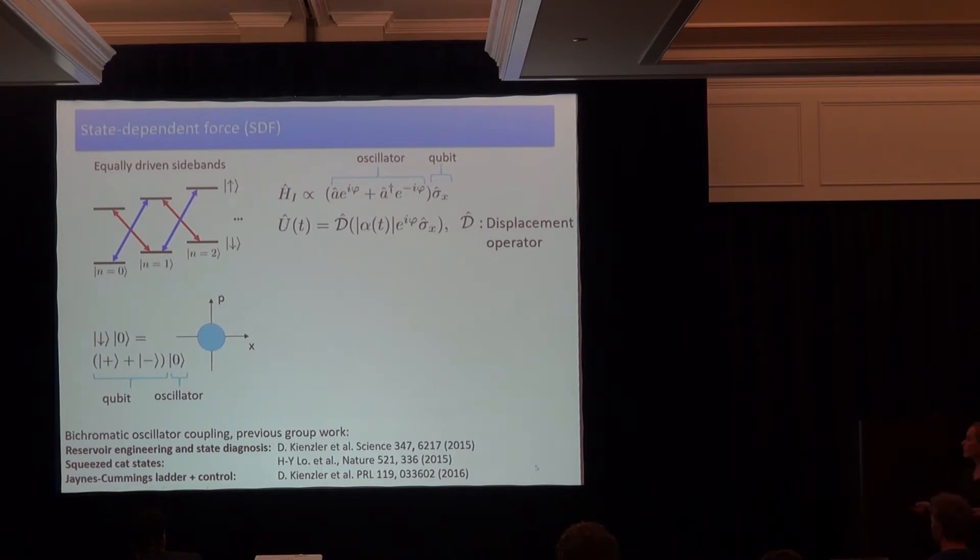What does this mean in practice? If we look at the ground state cooled oscillator, here shown as a phase-space cartoon, and an ion in the down state. So to see what this state-dependent force is doing, we can first observe that the down state is an equal superposition in the eigenbasis of the sigma-x operator. And that means if you apply the state-dependent force, our oscillator splits up into two parts entangled with these sigma-x eigenstates.